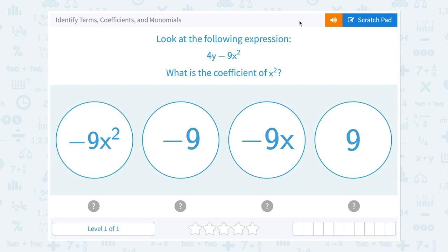We're going to read really carefully and see which of those vocabulary words, terms, coefficients, or monomials they're using. And we're going to think really carefully about each one. So this first question says, look at the following expression, 4y minus 9x squared. What is the coefficient of x squared?